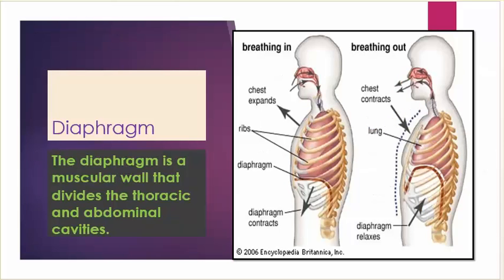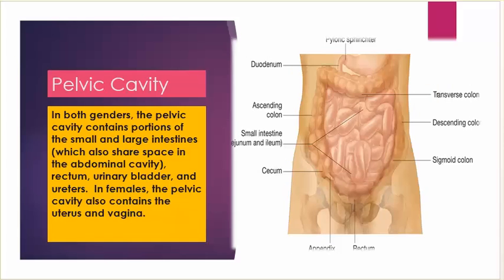Diaphragm: the diaphragm is a muscular wall that divides the thoracic and abdominal cavities. Pelvic cavity: in both genders, the pelvic cavity contains portions of the small and large intestines, which also share a space in the abdominal cavity, as well as the rectum, urinary bladder, and ureters. In females, the pelvic cavity also contains the uterus and vagina.